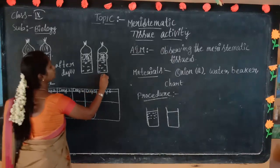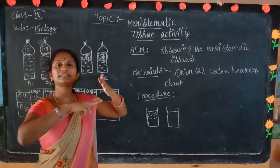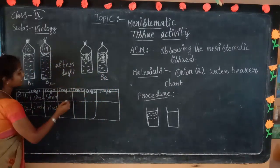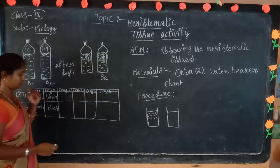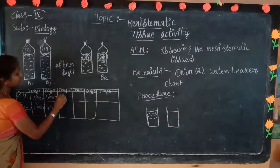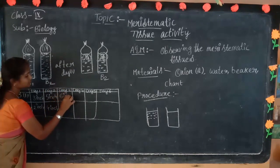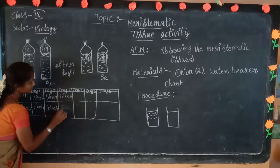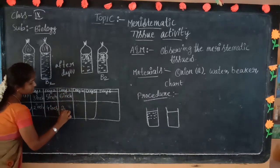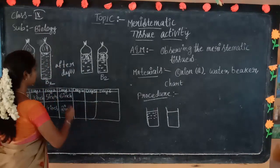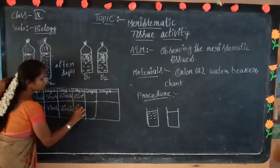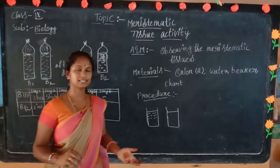On Day 3, take the Beaker 2 onion out and cut the meristematic tissues, then place it back in water. After you cut the meristematic tissues on Day 3, Beaker 1 grows to 6 inches, while Beaker 2 only reaches 3 inches. Because we cut the meristematic tissue, it will decrease in size — going back to 2 inches only. On Day 4, Beaker 1 will be 8 inches, while Beaker 2 is only 2 inches.